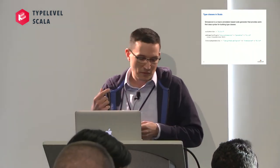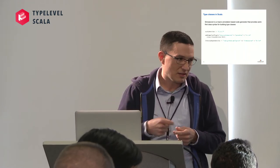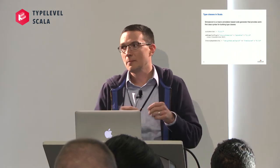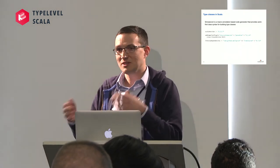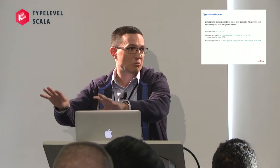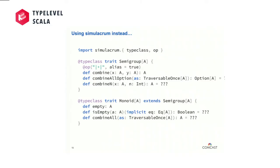Simulacrum is a project of mine, about a year old. It's a macro-annotation-based code generator — all it is is a code generator. It happens to generate code at compile time; it doesn't generate source files on disk, but it generates, compiles, and you get bytecode. Everything we've done so far with Simulacrum looks like this.